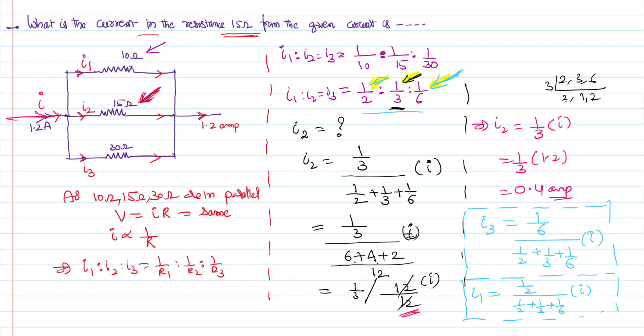By writing any of these equations, we can get any of the currents in the circuit by taking a simple concept into consideration that in parallel, voltage is same, current is reciprocal of resistance. That's it.